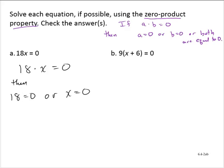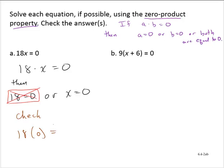Let's look at the statement. Can 18 equal 0? Never — 18 is never equal to 0, so that's useless to us. But x is equal to 0 makes sense; x can equal 0. Let's check our work. Going back to the original equation: is 18 times 0 equal to 0? Obviously yes. So x equals 0 is a solution of the equation.